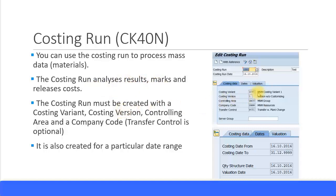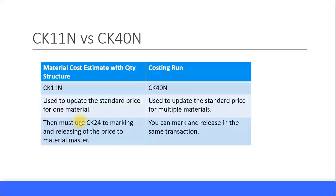Before you create the costing run, just like the cost estimate, you must have the costing variant configured. You must have the costing version — you can just use version one without any additional configuration. It must be done for your controlling area and it is per company code. Transfer control is optional — you can use it or leave it blank. It is also created for a particular date range, similar to what we saw with the material cost estimate.